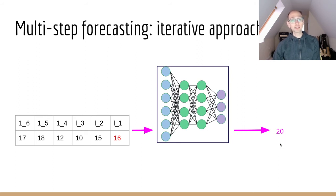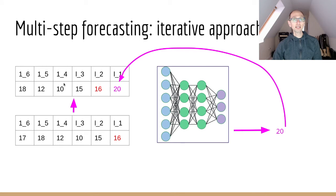We repeat this. We manipulate our input data again, so now we drop off lag six again, which was 17. Now we've only got four values that were our ground truths left, and we've got two values in the array that are forecasts. We push that through the model again and out pops our next forecast. You can see that if we go far enough into the future, we're eventually going to be forecasting purely off predictions of our model.